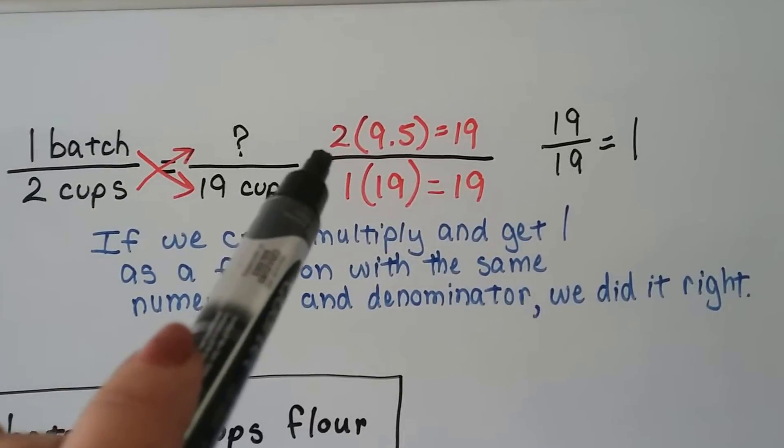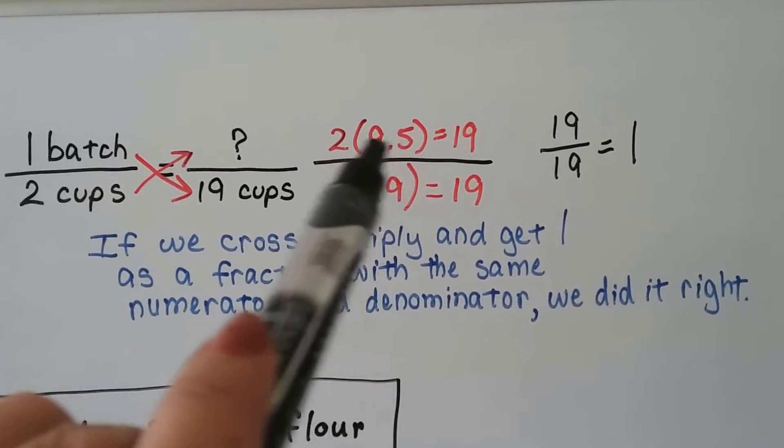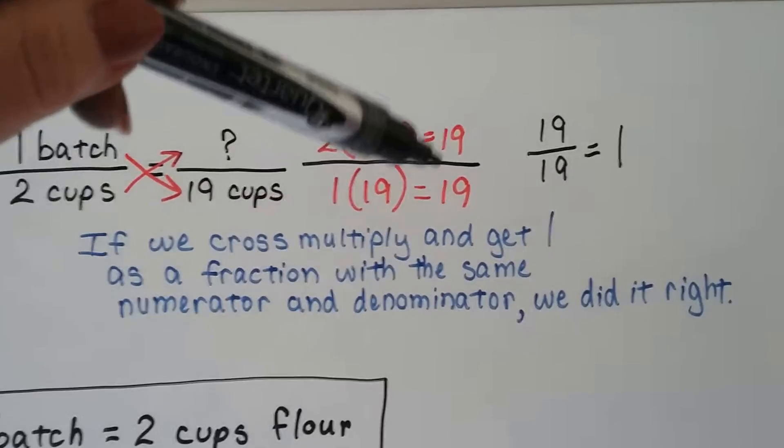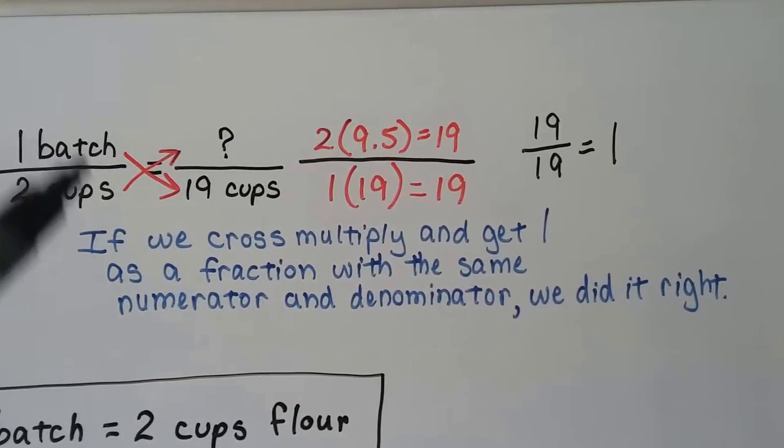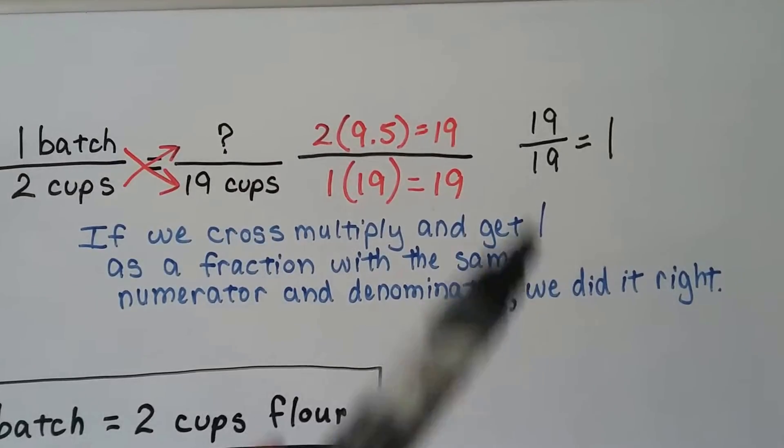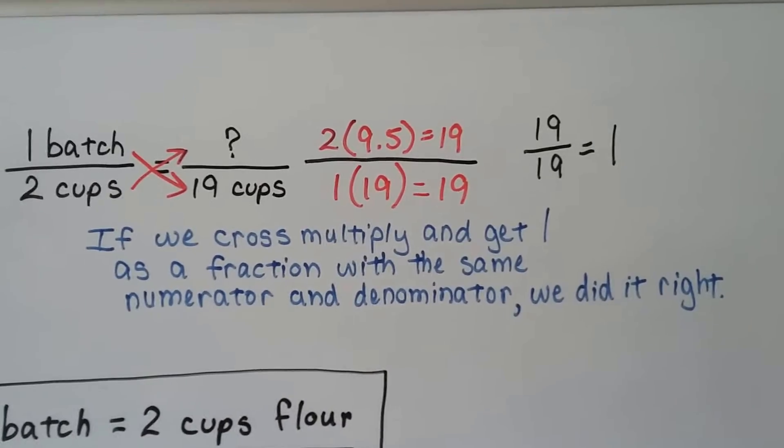Well, two times nine is 18. So if we add a half, that would give us two halves. That would give us the 19. We end up with a 19 over a 19. And if we cross multiply and get one as a fraction with the same numerator and denominator, we know we did it right.